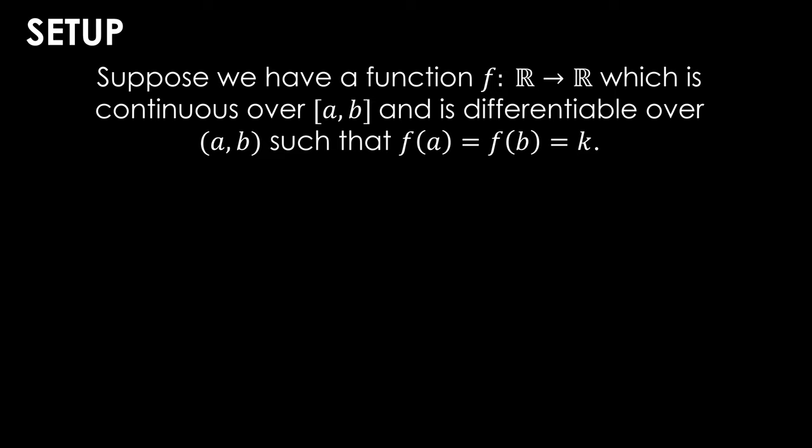We are now ready to tackle our proof to prove Rolle's theorem. This proof has most of its thinking derived from the OpenStax calculus textbook, and I will leave a link in the description to this textbook so that you can see the proof they lay out in their book. First, we need to do a bit of setup. We suppose that we have a function f, defined from reals to reals, which is continuous over a closed interval a to b, and differentiable over the open interval a to b, such that f(a) is equal to f(b), which is equal to k.